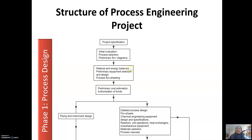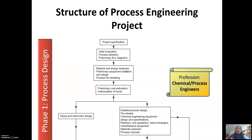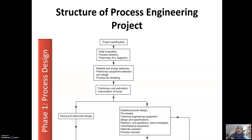Material and energy balances are used to balance all the materials that pass through one unit operation to another. After you identify the process, you need to check what equipment will support the process. For example, if you need heat treatment to kill microbes, the equipment could be a plate heat exchanger, a tubular heat exchanger, or a jacketed tank — it depends on the needs of your plant. After deciding the type of equipment, you need to do process flow sheeting.